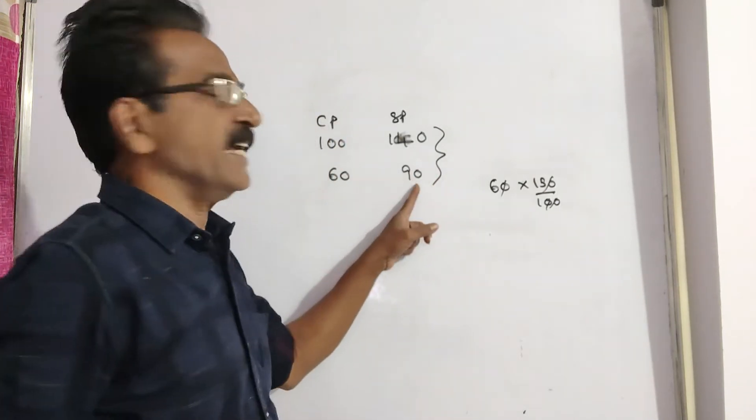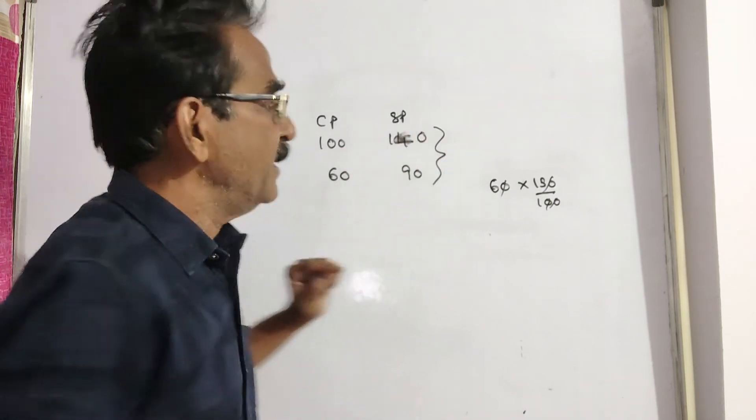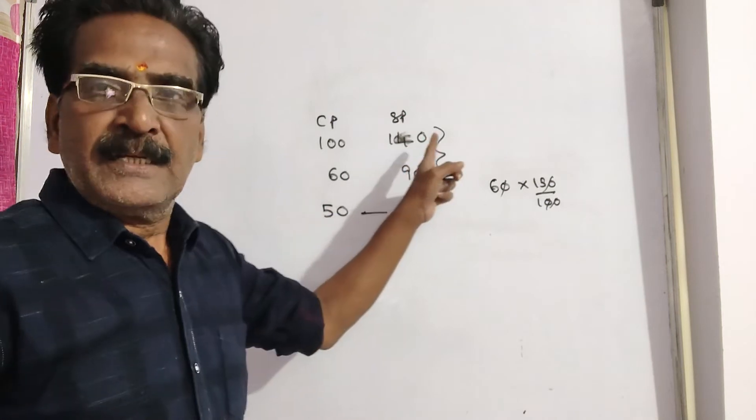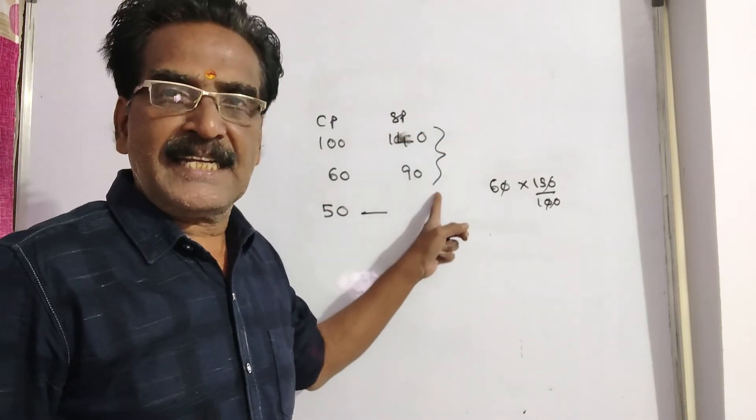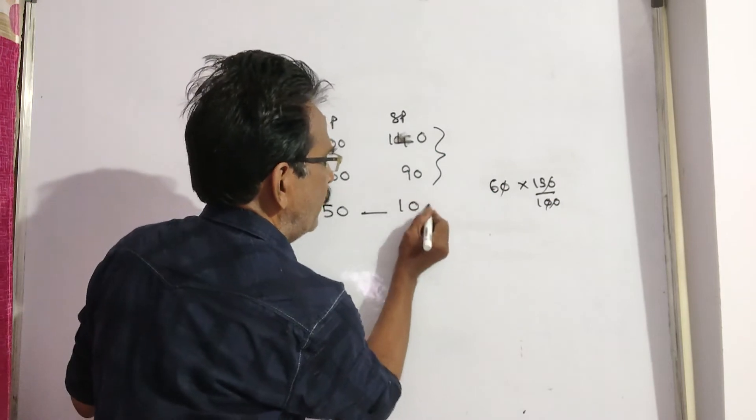So, this 90 is 50 rupees less than the earlier sold price. If 50 rupees less than the earlier sold price, the cost price will be 100.